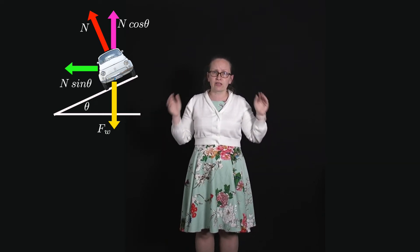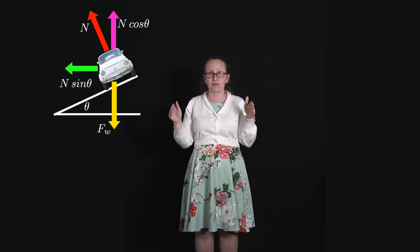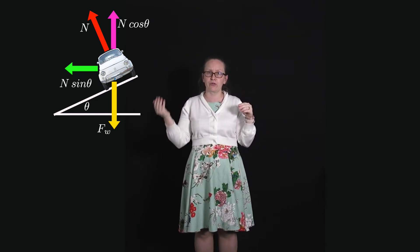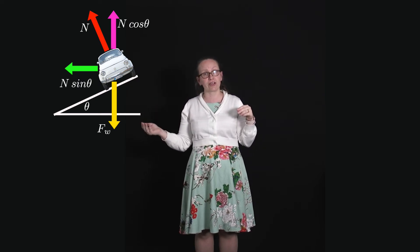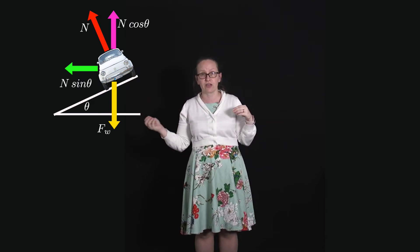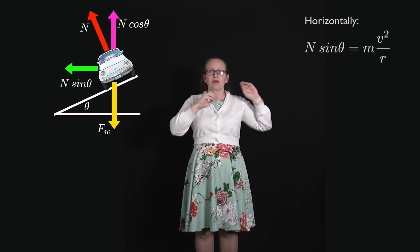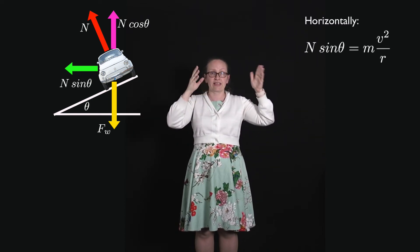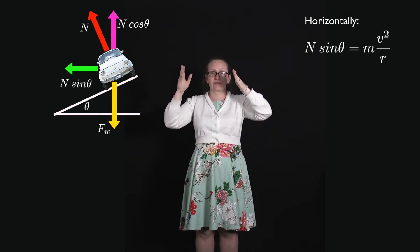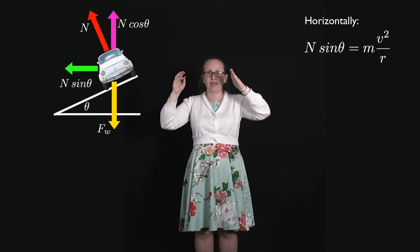Now what we're trying to do is find θ. In the horizontal direction, the only force acting is the horizontal component of the normal force. That must be equal to our net force in the horizontal direction, which is the centripetal force. So we can write that in the horizontal direction the forces acting are N sin θ, and this is equal to the resultant force which is mv²/r.